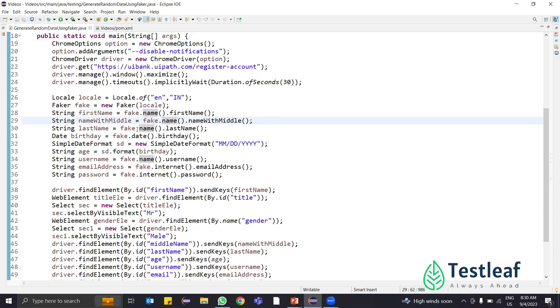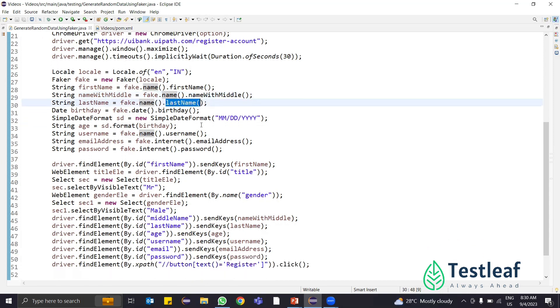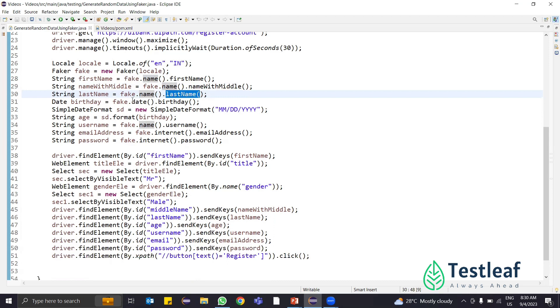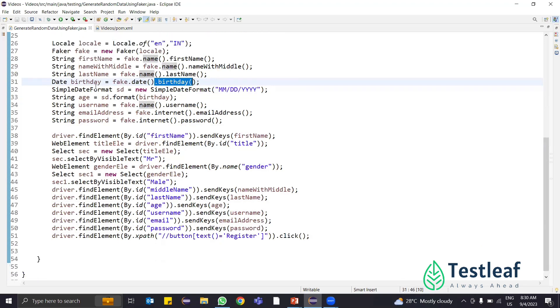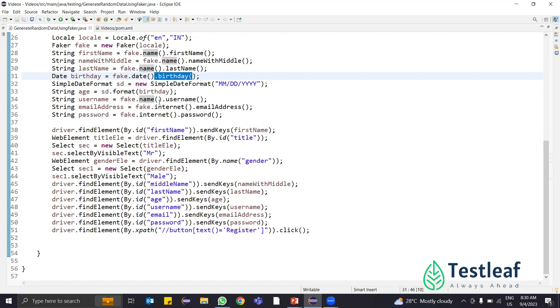If I want to generate a birth date, a random birth date, I can do it by calling date method and birthDate. I can even format it by using SimpleDateFormat class and use it in my test code. If I want to generate a username, an email address, a password, everything is possible using Faker class.